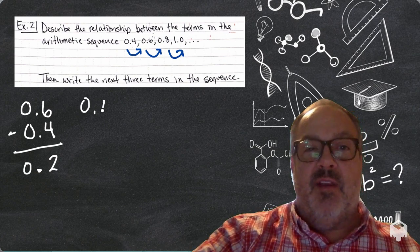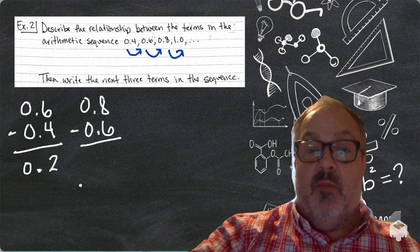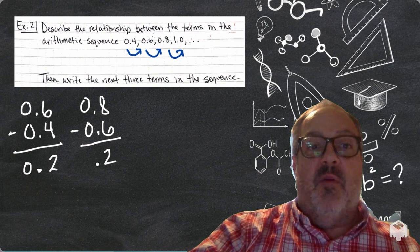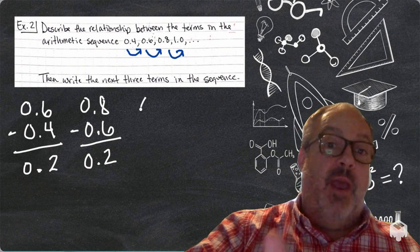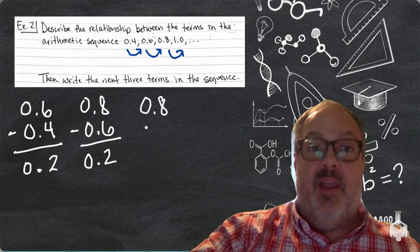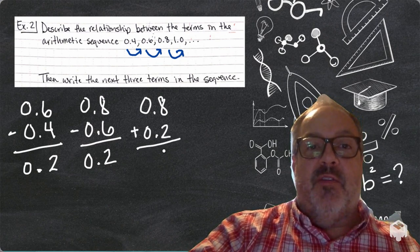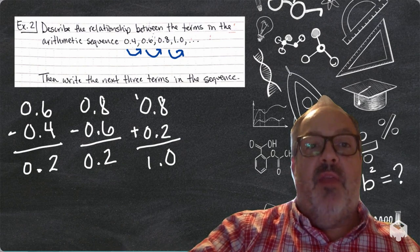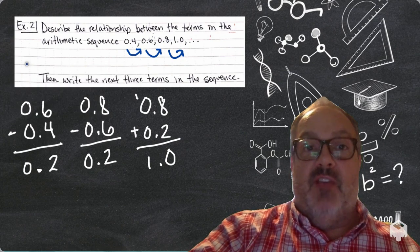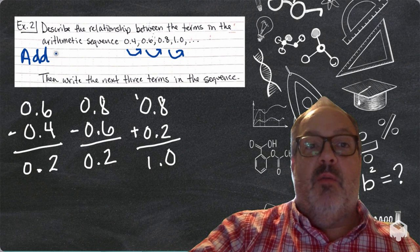Let's see if this pattern continues. So, I'm going to start at my third number in the sequence. And I'm going to subtract the second number from this in the sequence. And 0.8 minus 0.6 is 0.2. Let's try to see what would happen if I took that third sequence, 0.8, and added 0.2 instead of subtracting. So, 0.8 plus 0.2 is going to be 1.0.